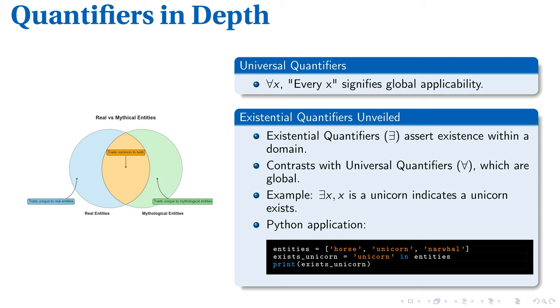Universal quantifier, represented as for all x, implies an all-encompassing truth. On the other hand, an existential quantifier, denoted as there exists, emphasizes the existence of at least one entity amongst many. Comparing both, you'll notice that while for all x generalizes the truth to a universal level, the existential quantifier specifies the existence of an entity within a given set.